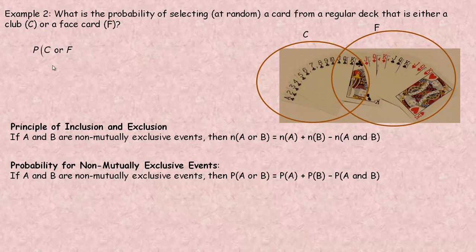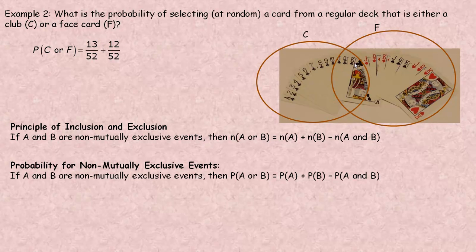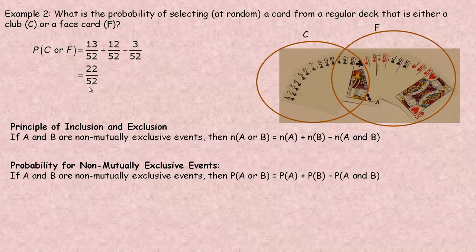To calculate the probability of a club or a face card: the probability of a club is 13/52, plus the probability of a face card, which is 12/52. But when I add those together, I'm double-counting the jack, queen, and king of clubs, so we subtract those afterwards. That gives us 13 + 12 − 3 = 22 outcomes, so the probability is 22/52, which reduces to 11/26.